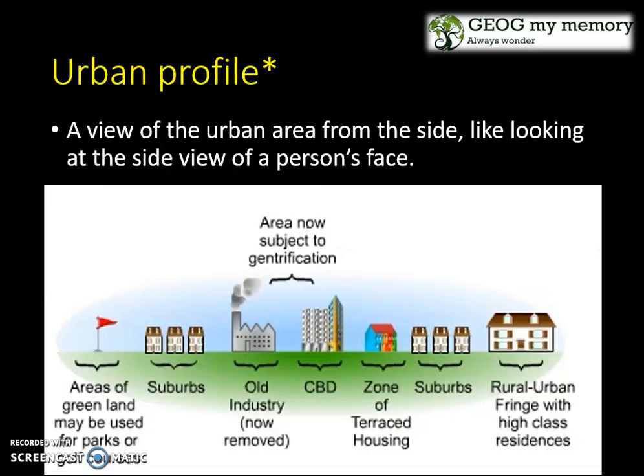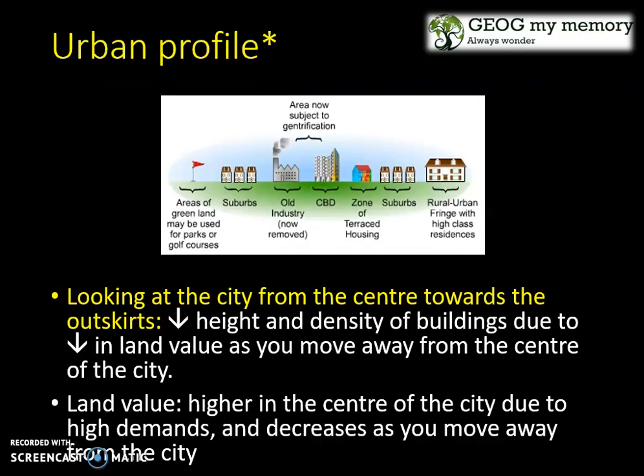Let's look at your urban profile. This is basically a view of the urban area from the side, looking like the side view of a person's face. Looking at the city from the center towards the outskirts, you will see a decrease in the height and density of buildings due to the decrease in land value as you move away from the center of the city. Your land value is higher in the center of the city due to high demand and decreases as you move away from the city.